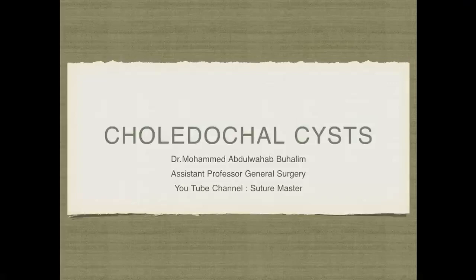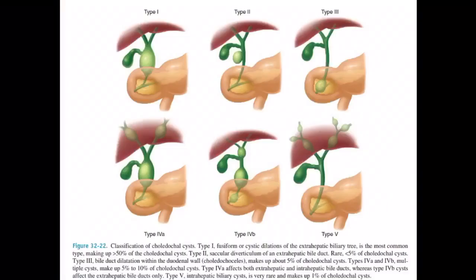This is a brief presentation regarding choledochal cysts, in which I will talk about the classifications and importantly how to memorize these classifications and also the treatment for each type. This figure is taken from Schwartz, showing types one, two, three, four A, four B, and five. When you see the figure it looks easy, but when you want to memorize it you will find it difficult.